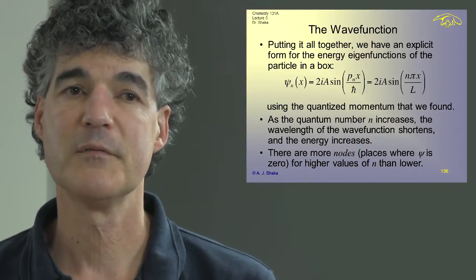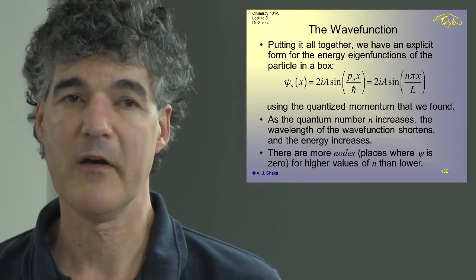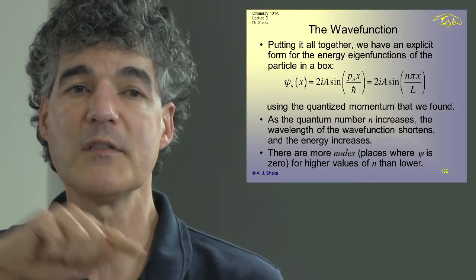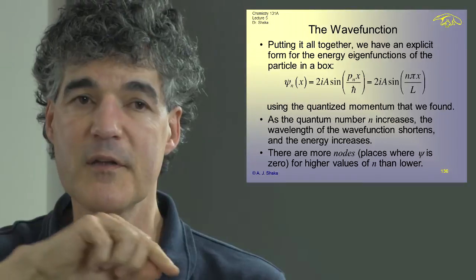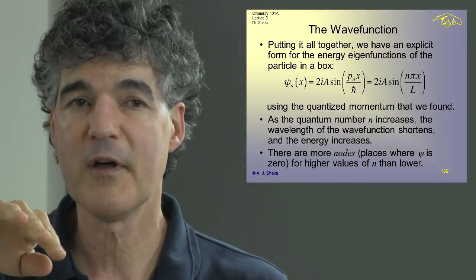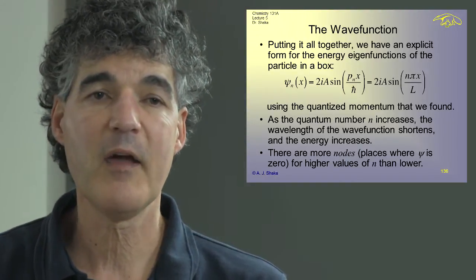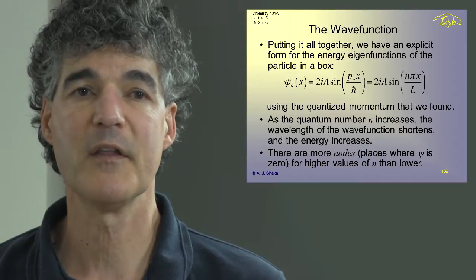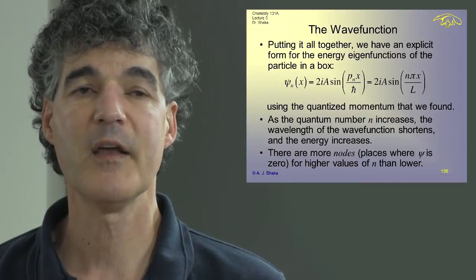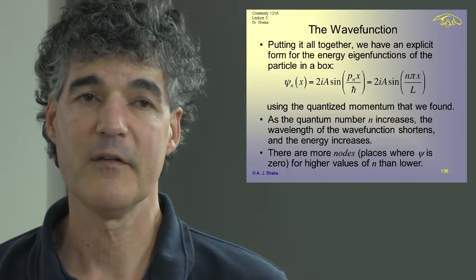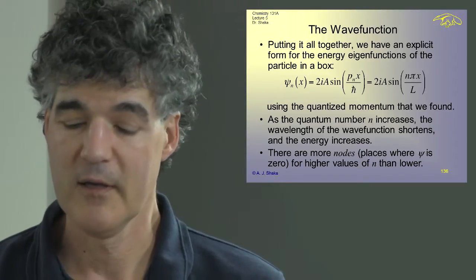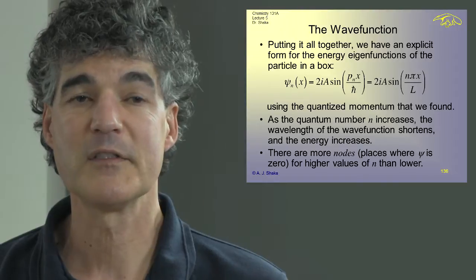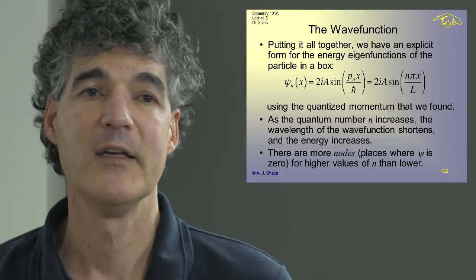The nodes—places where the wave function crosses zero—are very important because they tell us where the particle is never found, since psi-star psi = 0 there. The probability smoothly goes to zero at a node. Even though the box is uniform, there are places where we never expect to find the particle if we measure its position. This is very different from the classical situation of a ball in a box. For macroscopic objects, the quantum state has huge n and the de Broglie wavelength is far too short to observe this behavior.